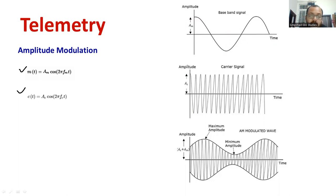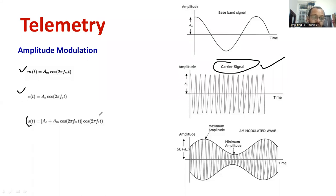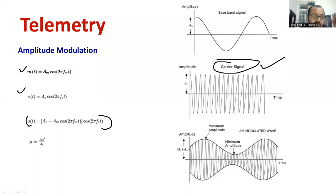Ac is the amplitude of the carrier signal — we have to take that into consideration. Now we need to add both the message signal and the carrier signal. The expression for the modulated signal is given by: [Ac + Am × cos(2π·fm·t)] × cos(2π·fc·t), where fc is the frequency of the carrier signal. One more terminology is the modulation index — it is the ratio of the amplitude of the message signal to the amplitude of the carrier signal, usually denoted by the letter mu (μ).